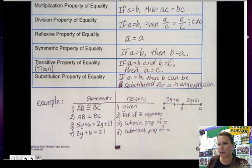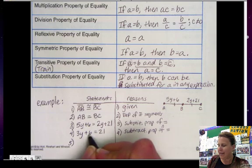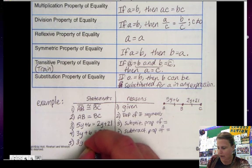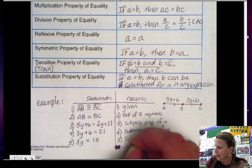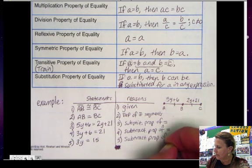Number 5. Now I want to move my 6 over. So how do I move my 6? Well I need to subtract again. So that's going to be 3y equals 15. And once again that is subtraction property of equality.